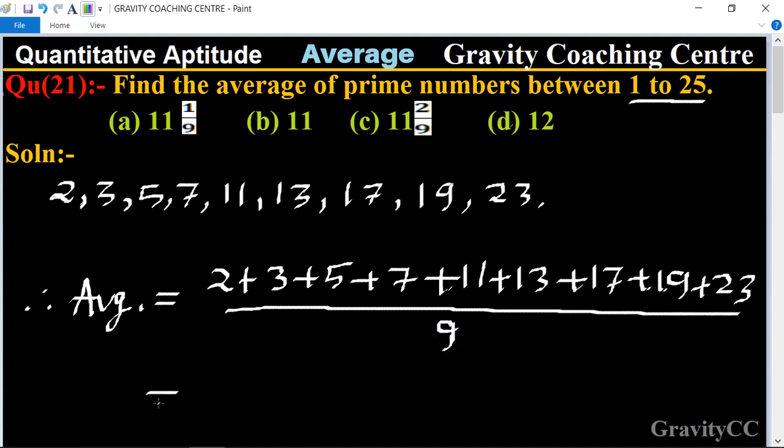So equal to total sum is 100 upon 9. Now we change it in mixed fraction, so its mixed fraction is 11 whole number 1 upon 9, which is the required answer. So option C is the correct answer.